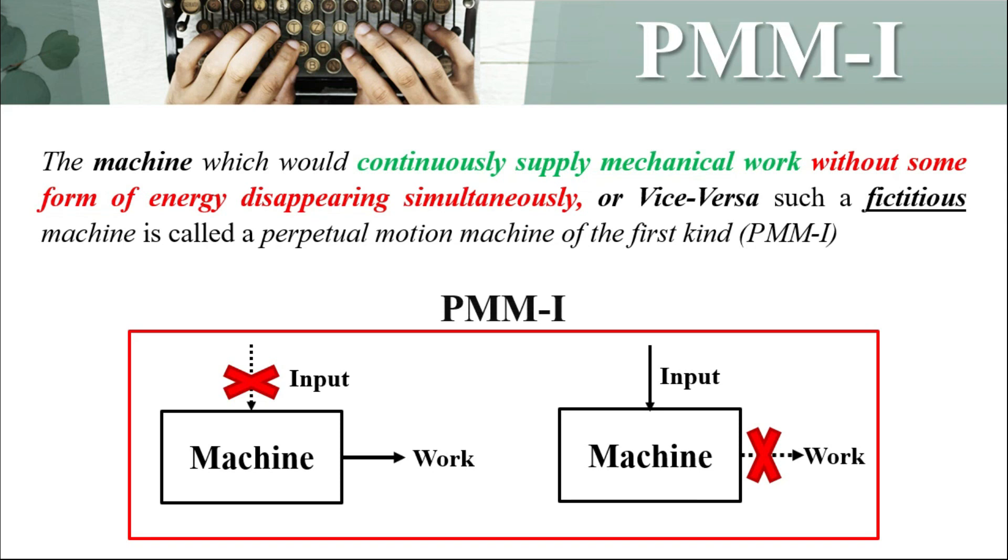Both these cases are fictitious, are imaginary, they do not exist. This means there is no perpetual motion machine of first kind which violates the first law of thermodynamics.